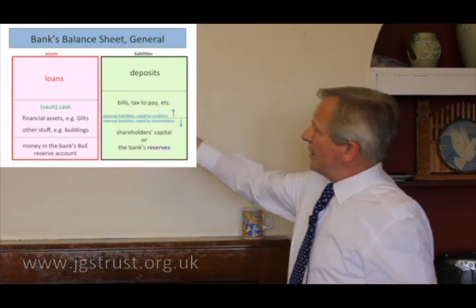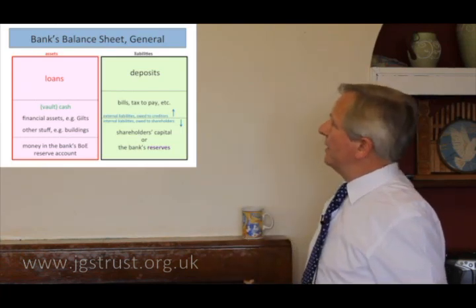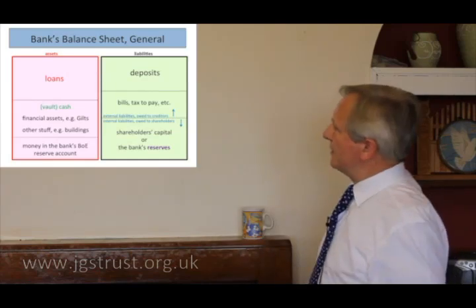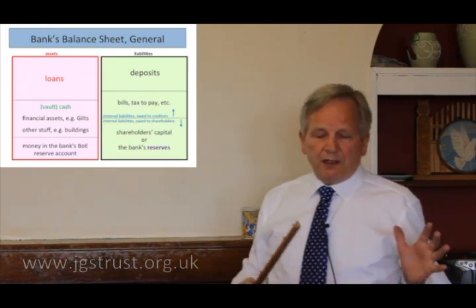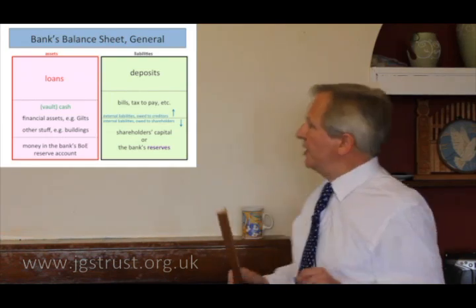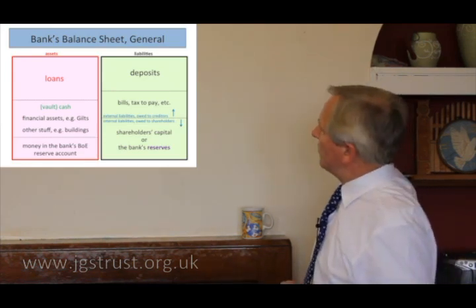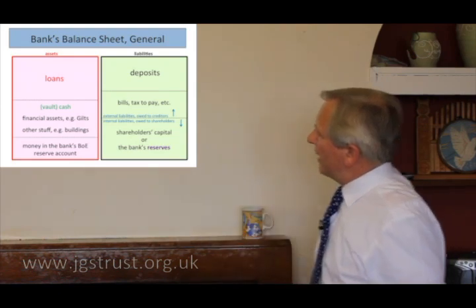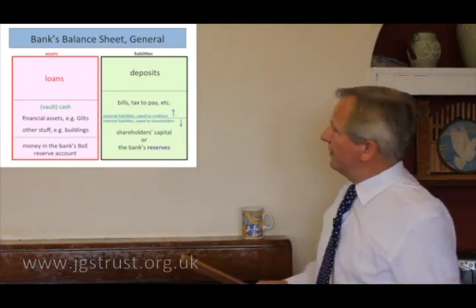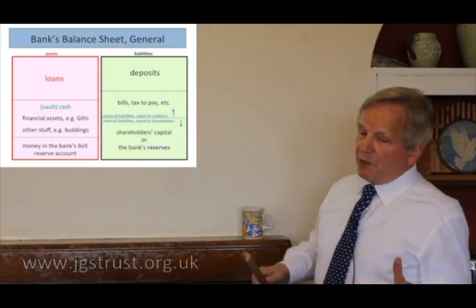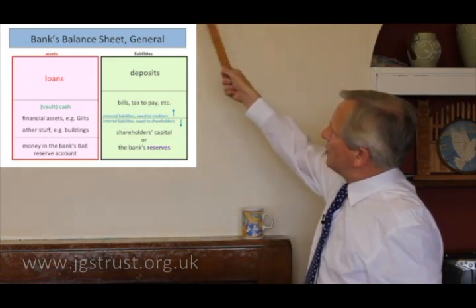Financial assets: banks tend to buy gilts, which are IOUs from the British government — it's a favourite asset of banks. And obviously the nice buildings, cars, and so on. Also, remember, initially the shareholders put their initial money into the account at the Bank of England — called their reserve account. So the bank has its money in the central bank, the Bank of England, and the bank's customers have their money in the commercial bank. On the commercial bank's balance sheet, the bank's money is an asset and the customer's deposits are a liability.